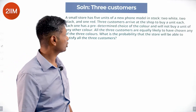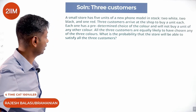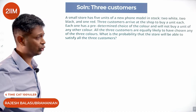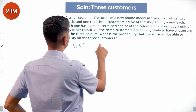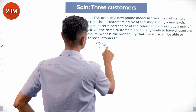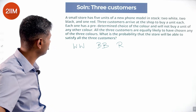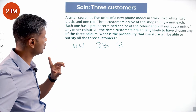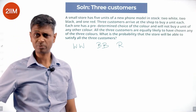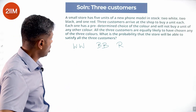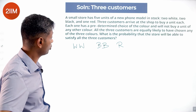A small store has five units of a new phone model in stock: two whites, two blacks, and one red. Three customers arrive at the shop to buy a unit each. Each one has a predetermined choice of color and will not buy a unit of any other color — very finicky customers. All three customers are equally likely to have chosen any of the three colors.